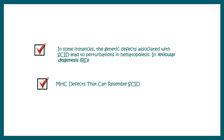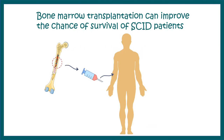Lastly, some important facts about SCID: in most instances the genetic defect associated with SCID might lead to reticular dysgenesis, alter hematopoiesis, and can also affect innate cells derived from the myeloid lineage. MHC defects can sometimes resemble SCID-like phenotypes, but MHC defects do not necessarily give rise to SCID. The treatment option currently available is bone marrow transplantation, though the success rate is not very high, it does increase the chance of survival.